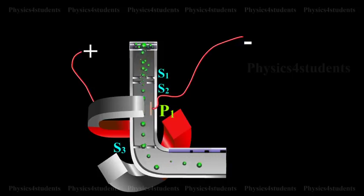These ions are deflected along circular path of radius R and strike the photographic plate.